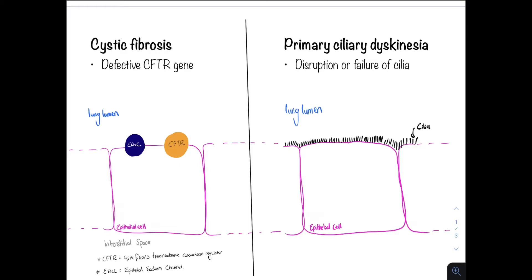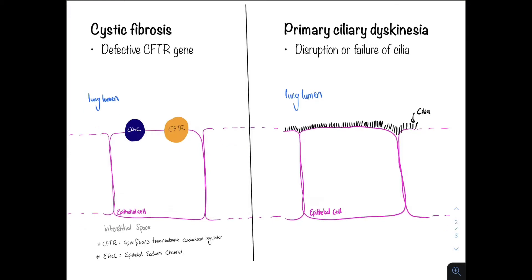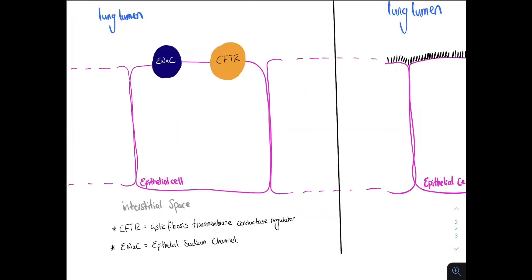In cystic fibrosis, we have a defective CFTR gene. The CFTR gene is responsible for the movement of chloride ions out of the cell. It is also responsible for the inhibition of the epithelial sodium channel.